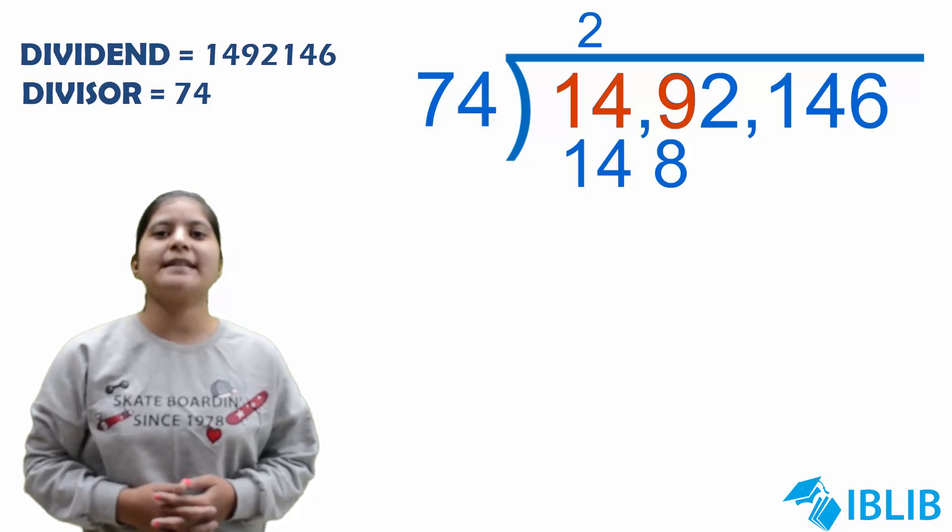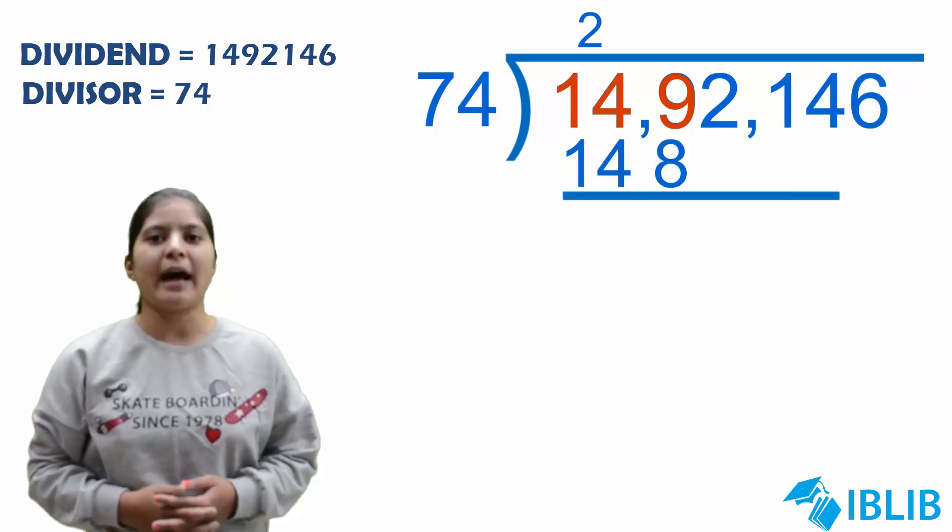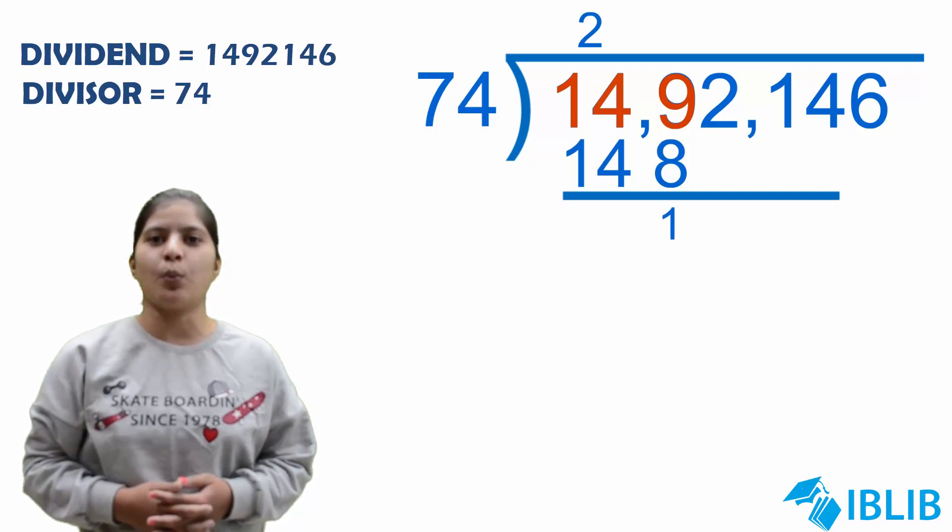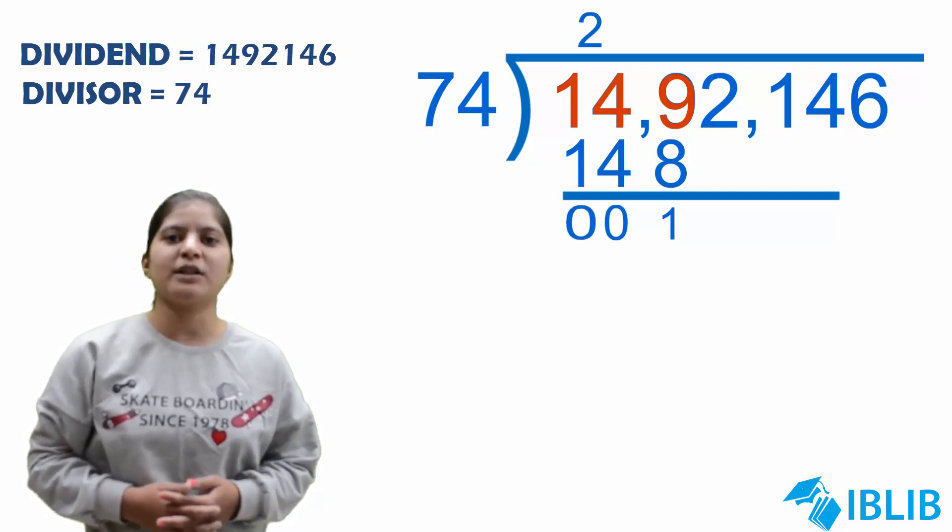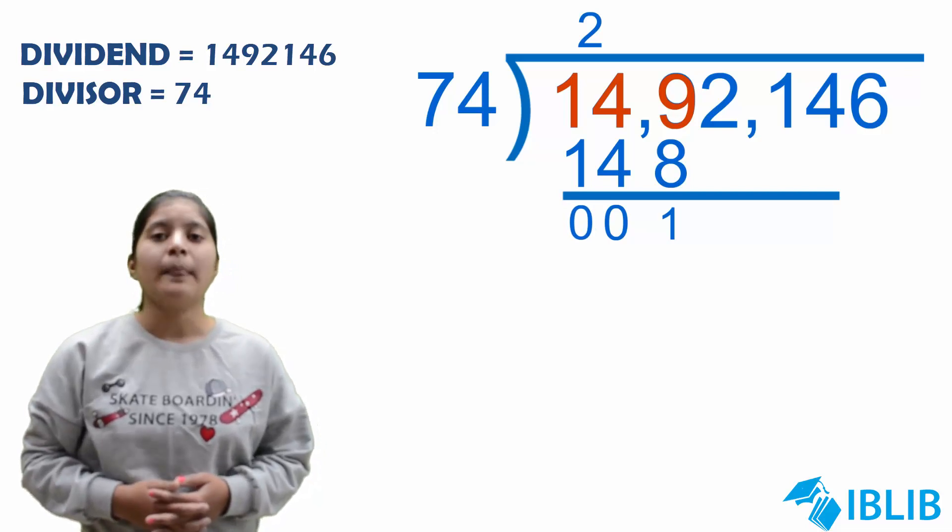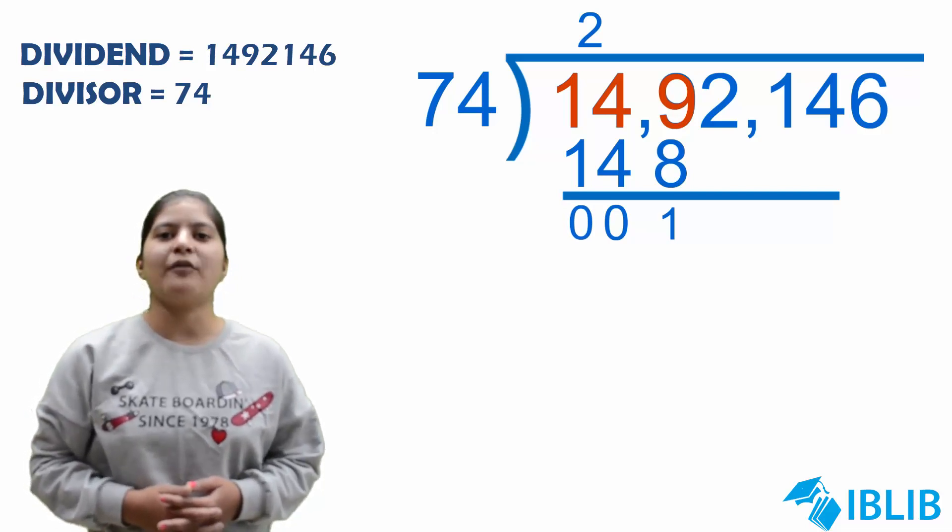Now, we will subtract these digits. 9 minus 8 will give us 1. 4 minus 4 is 0 and 1 minus 1 is also 0. Now, in remainder we are having 1.